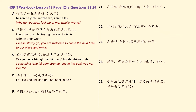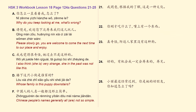Letter D: 楼下这只小狗是谁家的？ — Whose family is this puppy downstairs? And letter F: 中国人的名字一般都没那么简单。 — Chinese people's names generally are not so simple.